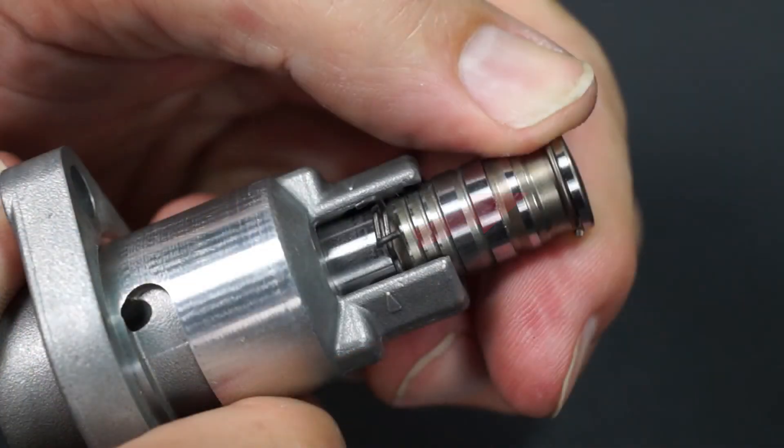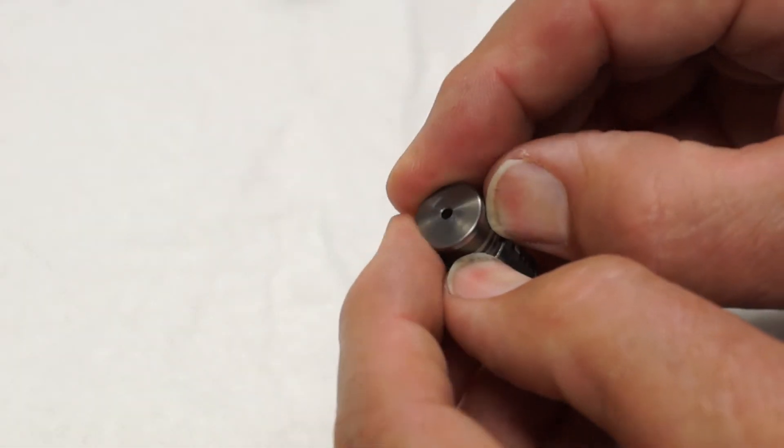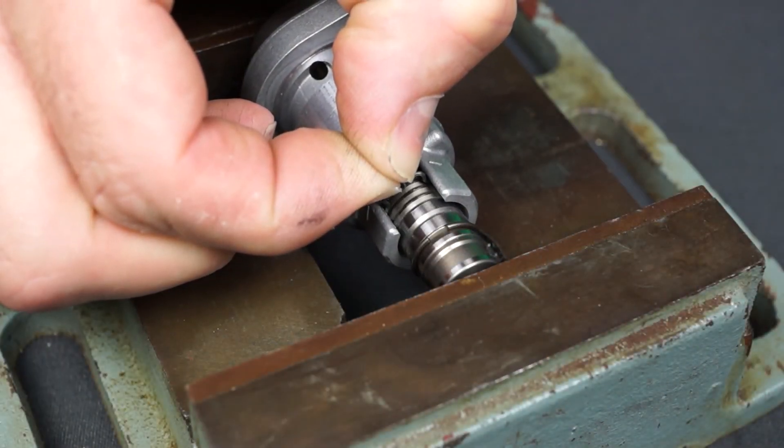If the tensioner rod is pressed beyond this position, the clip will be pushed out of place and the tensioner rod will not be locked in the retracted position. If this happens, reposition the circlip from the end of the tensioner rod into the starting groove and repeat the process.